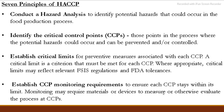Critical control points are the specific points in the food production process where we can identify and prevent potential hazards. We need to establish critical limits for each of these critical control points to ensure hazards are controlled.